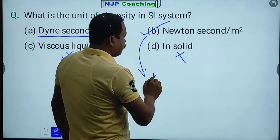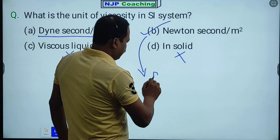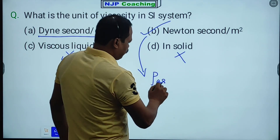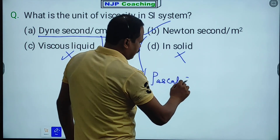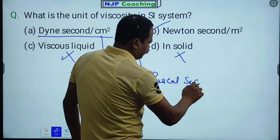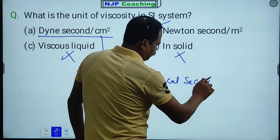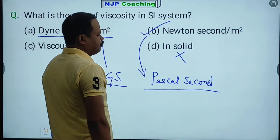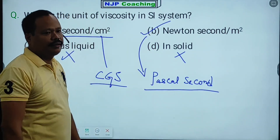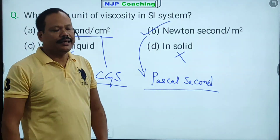Newton second per meter square. So Pascal — Pascal second. The SI unit of viscosity is Pascal second.